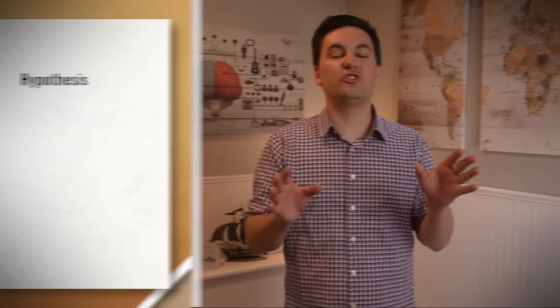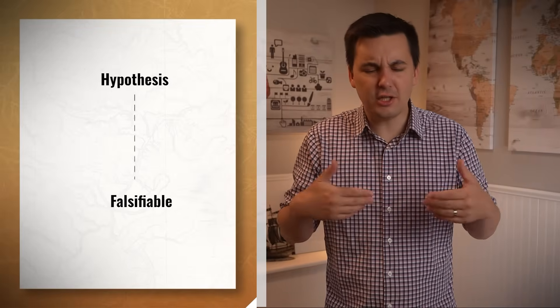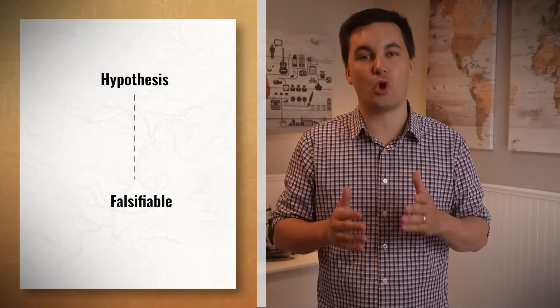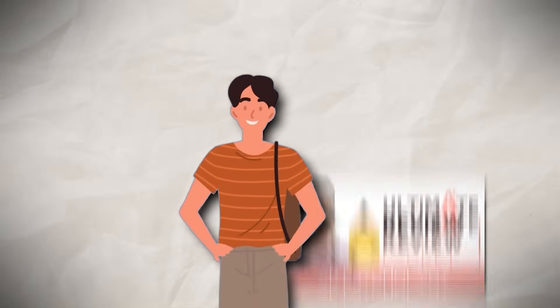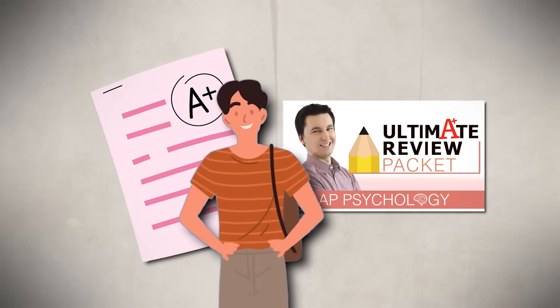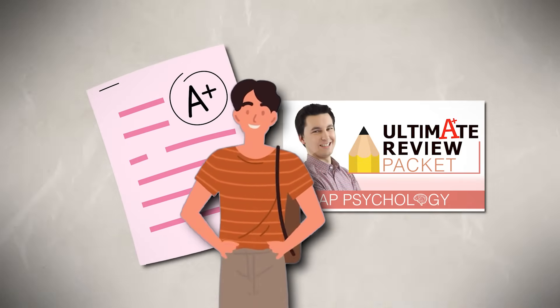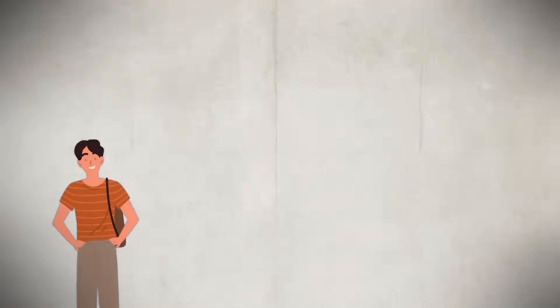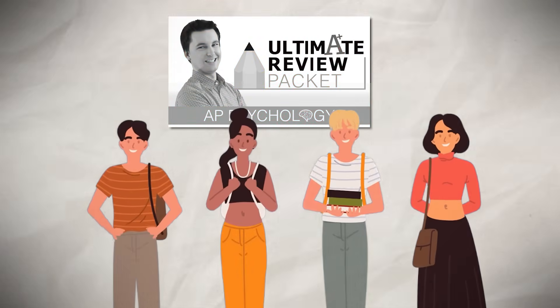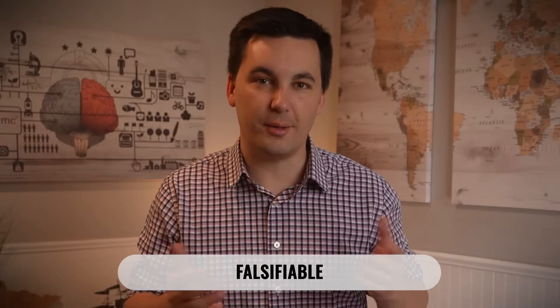A hypothesis must be falsifiable, meaning it can be proven wrong. For example, a hypothesis that students who use the ultimate review packet will score higher on the AP Psychology exam compared to those who do not could be true, but it could also be wrong — meaning it is falsifiable.